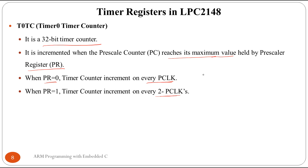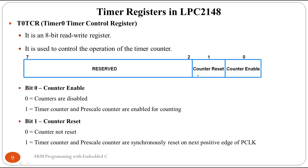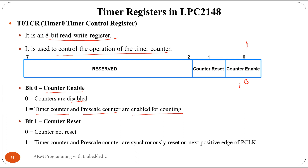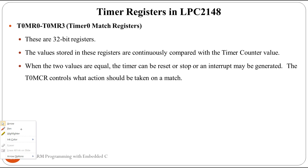The Timer 0 Timer Control Register is an 8-bit read/write register used to control the operation of the timer counter. Bit 0 is the counter enable bit — writing zero disables the counter, writing one enables the timer counter and prescaler counter. Bit 1 is the reset bit — writing one synchronously resets the timer counter and prescaler counter on the next positive edge of the peripheral clock.